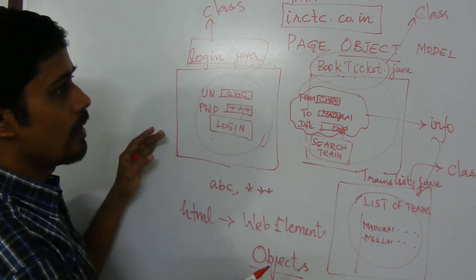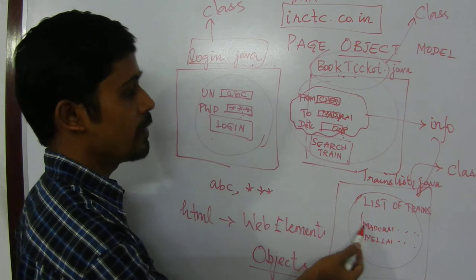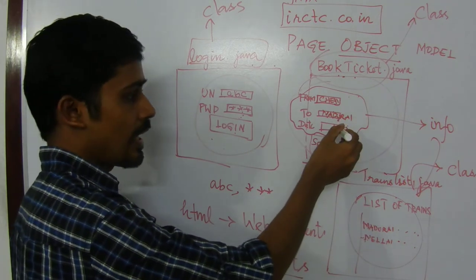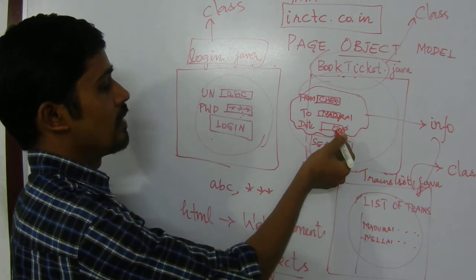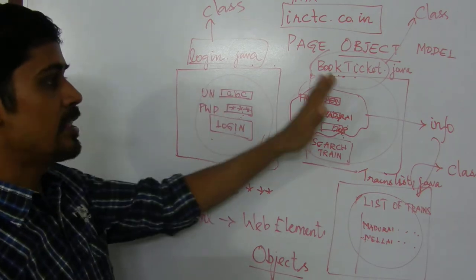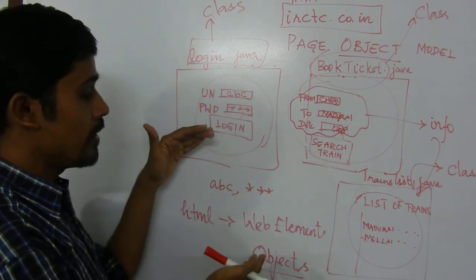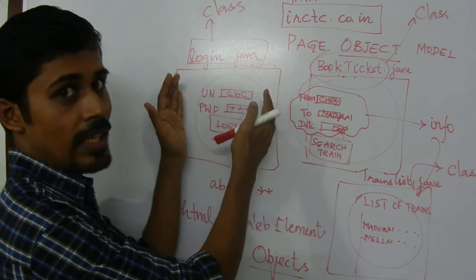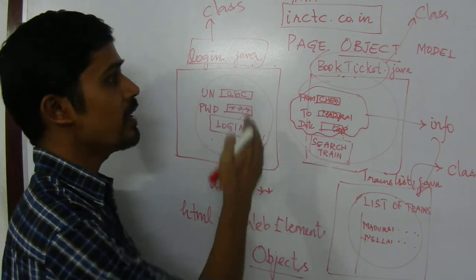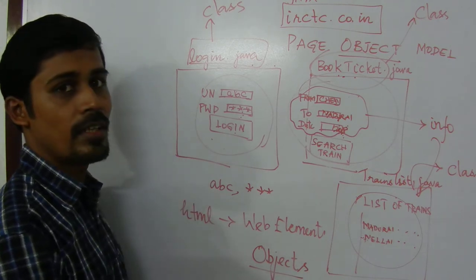So we are going to call this model as page object model. This page depends on the object information from the previous page. In other words, this class is dependent on the objects given from the previous Java class. A web developer will say these are all different web pages with different web elements. We are going to say these are all different Java classes, and each Java class has its own objects and we pass them on. We will continue this page object model discussion further. This is just an introduction about the page object model. Thank you.